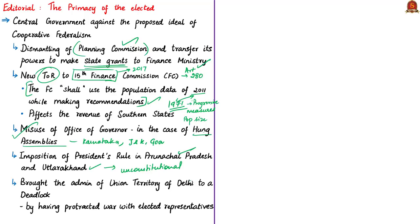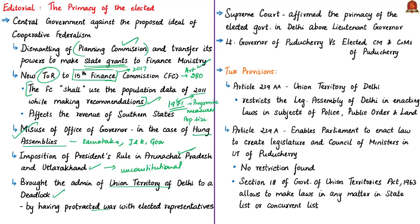The central government almost brought the administration of the Union Territory of Delhi into a deadlock by waging a protracted war with the elected Delhi government through the Lieutenant Governor — an unelected nominee of the central government. This matter was taken to the Supreme Court, which affirmed the primacy of the elected government in Delhi over the unelected Lieutenant Governor, giving primacy to the elected government and respecting the federal rights of the Union Territory. That is why the title of the article is 'The Primacy of the Elected.'